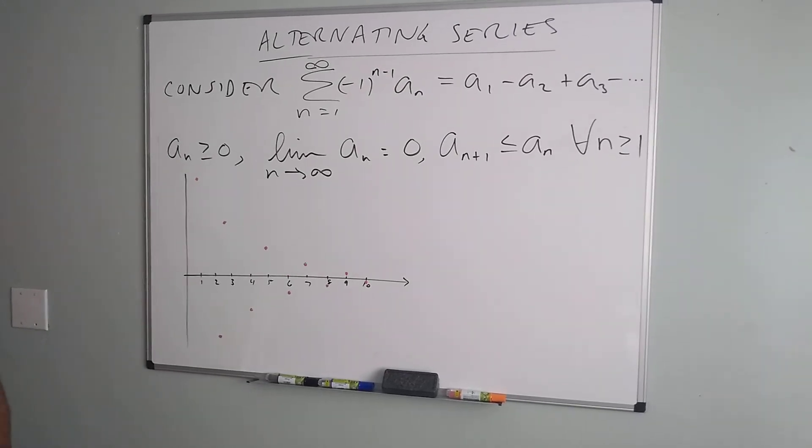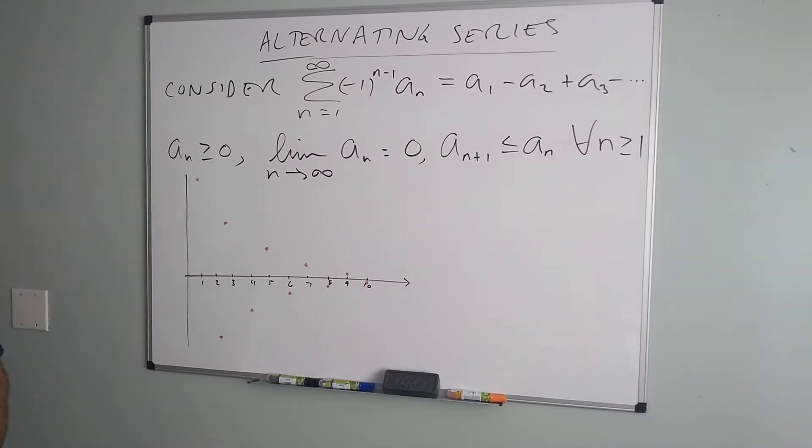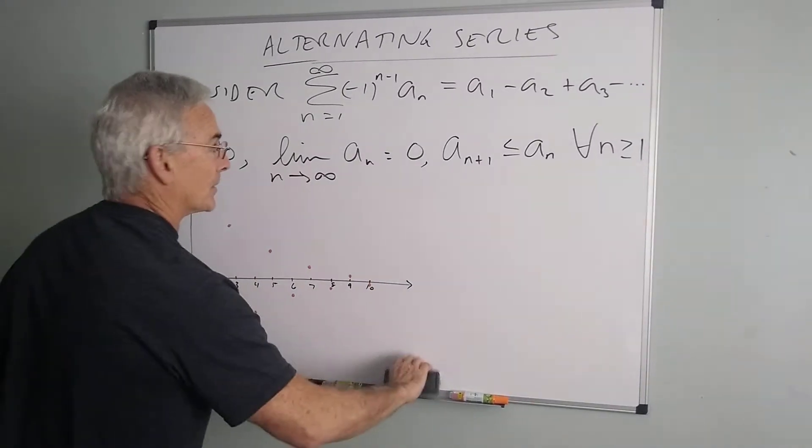So what we want to do is consider what will it take for a series to converge just on the fact that it alternates.